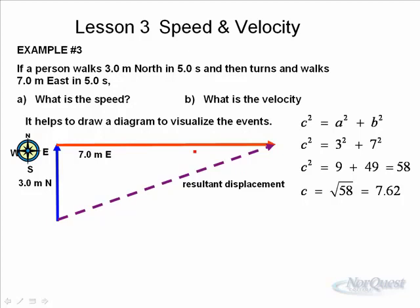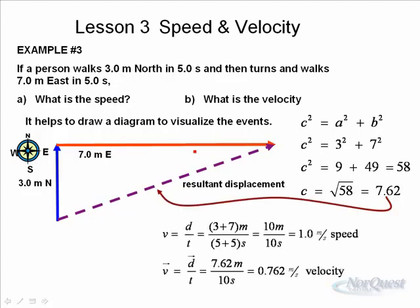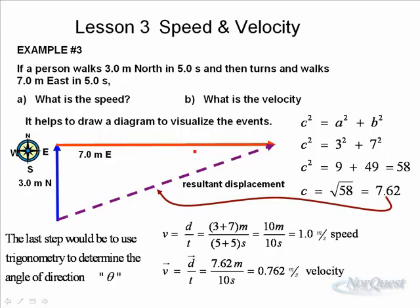That's the displacement of the person, but since displacement is a vector, it must have a direction — so we need to find the angle. The speed is still one meter per second. The velocity equals seven point six two meters displacement divided by ten seconds, giving zero point seven six two meters per second. However, that's not a complete velocity because it doesn't include direction. The last step would be to use trigonometry — sine, cosine, or tangent — to determine the angle of direction, which we'll come back to later.